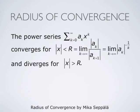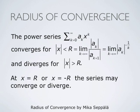The radius of convergence R can be computed in two ways: R equals the limit as k goes to infinity of |a_k|/|a_{k+1}|, or R equals the limit as k goes to infinity of |a_k|^{-1/k}, where the a_k's are the coefficients of x^k in the power series. The series converges if |x| is less than R and diverges if |x| is greater than R. At x equals R or x equals negative R, the series may converge or diverge — the root and ratio tests are inconclusive in this case.